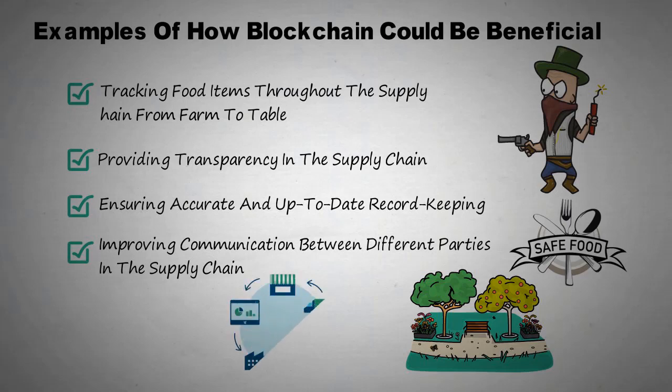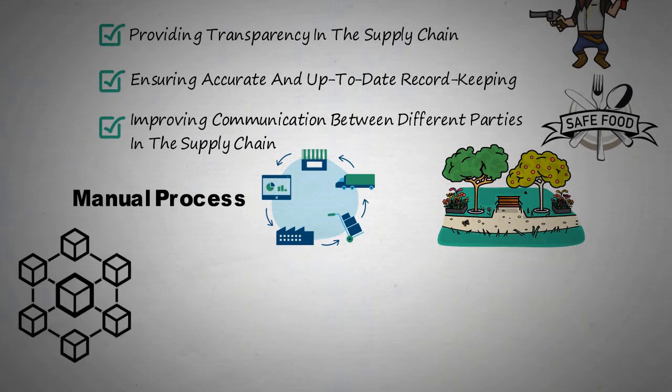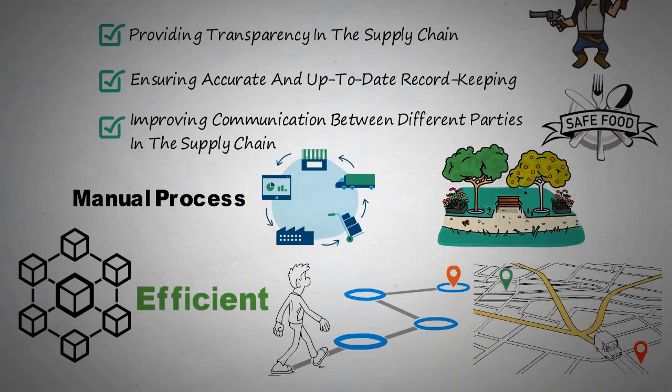In the past, supply chain management has been a manual process that is prone to error. Blockchain technology can automate this process and make it more efficient. For example, blockchain could be used to track the movement of food items throughout the supply chain. This would allow for real-time tracking of food items and would help to reduce waste and improve efficiency.